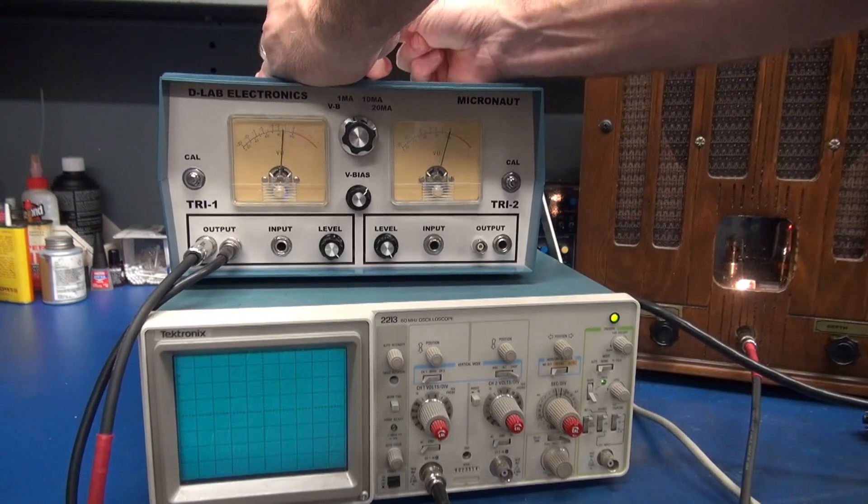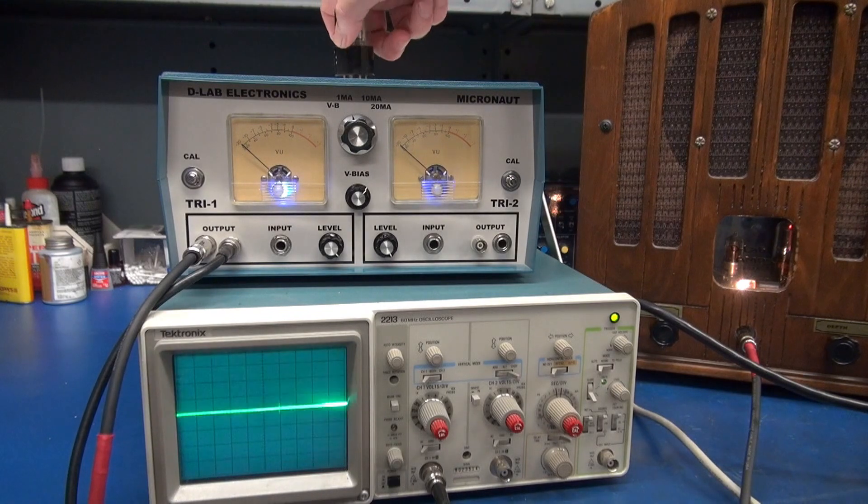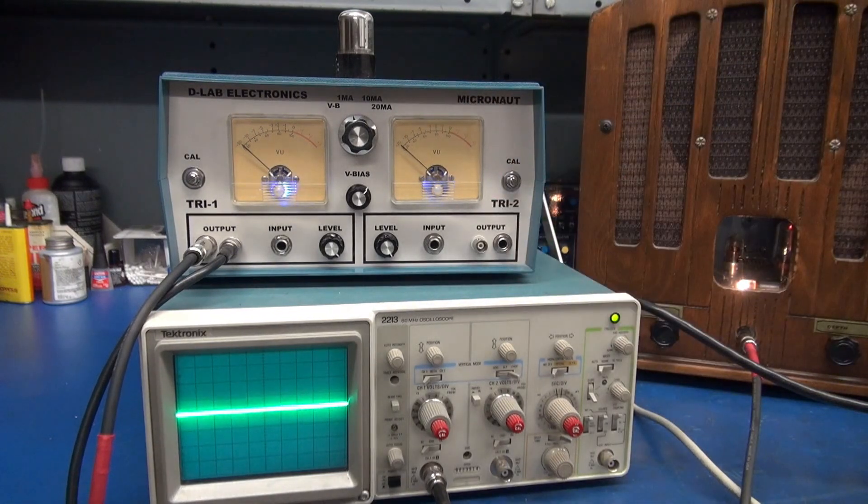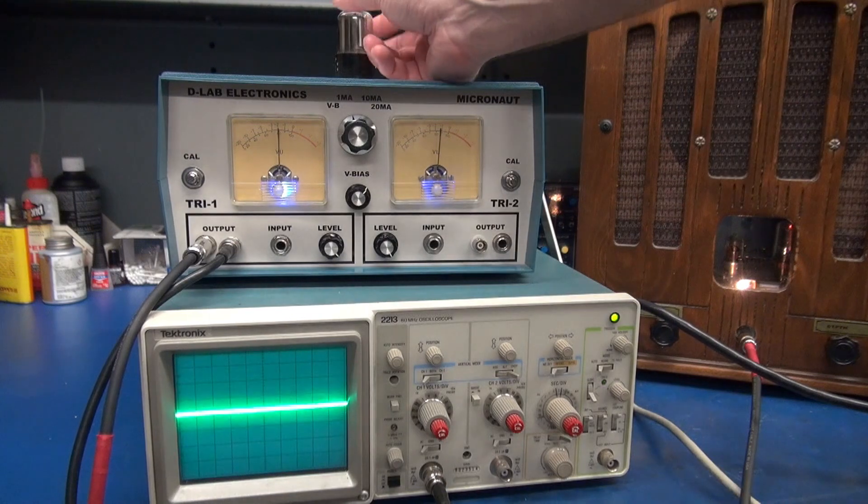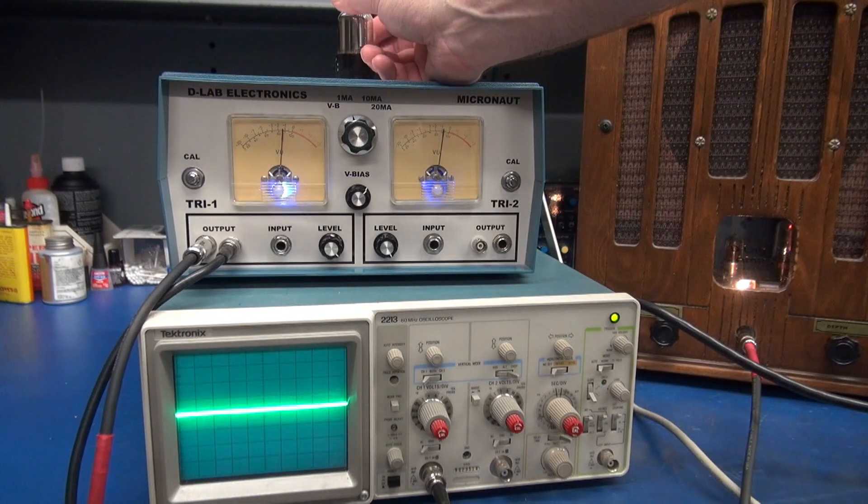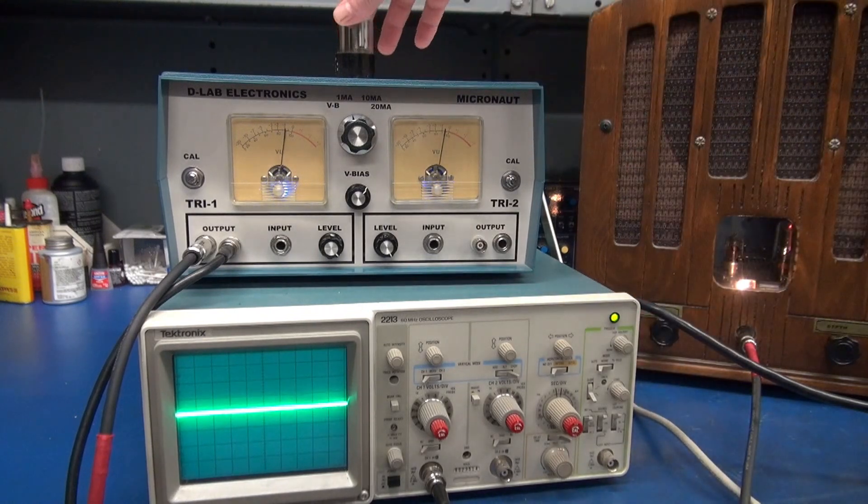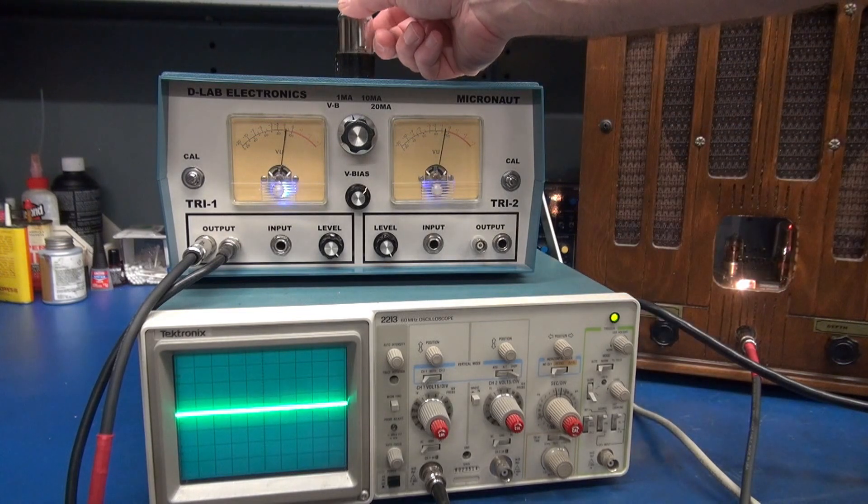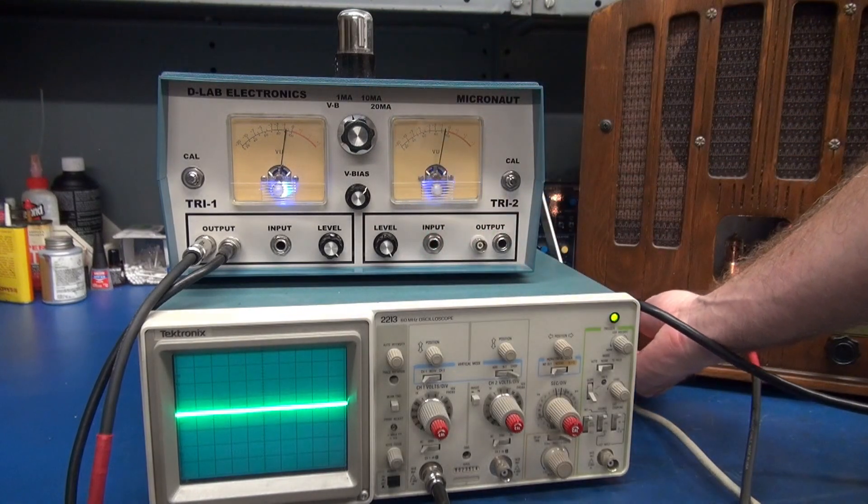Now I'm going to take this one out. We'll put in a known good 6SL7. Wait to see the current on the meters. There she comes. Let's tap on this tube. Look at the scope. No activity. Bring up the volume. Just like the 12AX7 here, a little bit of that. But it's nothing like that lightning storm that you saw a few minutes ago.